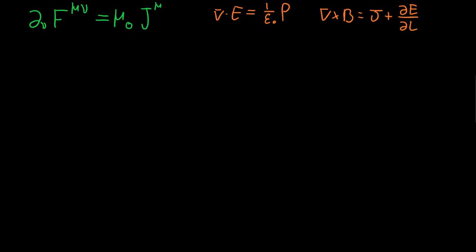So in green I have the Maxwell equation we will need written in tensor notation and in orange I have its equivalent in vector notation, and we'll go through both the proofs and compare them to see how they fare up.